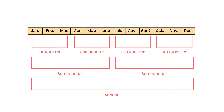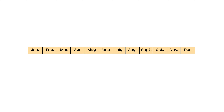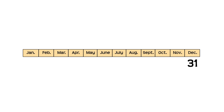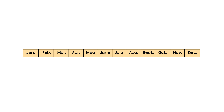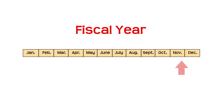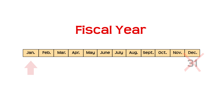Take note that the annual reporting period does not always end on December 31. When a reporting period ends on December 31, the company adopts a calendar year. A fiscal year is adopted when the accounting period ends on any day except the last day of the calendar year. For example, a fiscal year may end on the 31st day of March.